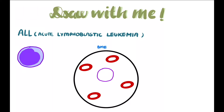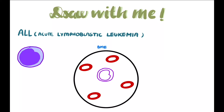Starting off, we shall make the nuclei of the lymphoblast, which is characteristically defined as having a high nuclear cytoplasmic ratio. Here is the nuclei — it has a high nuclear cytoplasmic ratio. And if you observe, the cytoplasm is characteristically scanty.